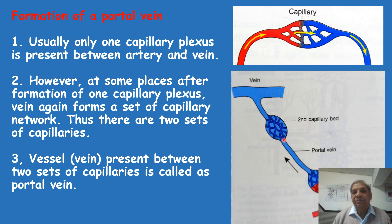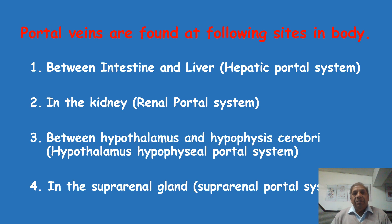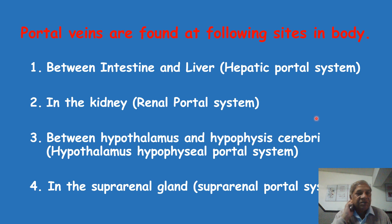A portal vein is defined as a vein which lies between two sets of capillary plexus. Portal veins are found at various places in our body where they serve very important functions.